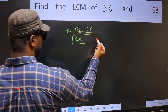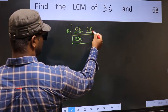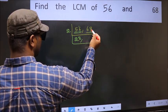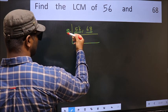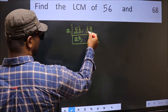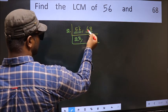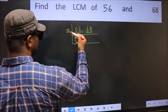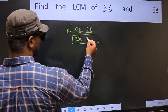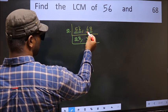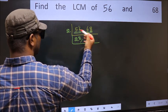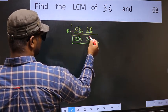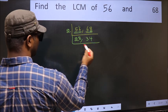The other number is 68. Last digit is 8 — even, so this is divisible by 2. First digit is 6; 2×3=6. The other digit is 8; 2×4=8. So 68 divided by 2 gives 34.